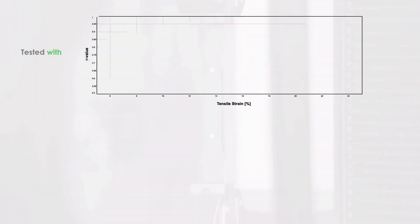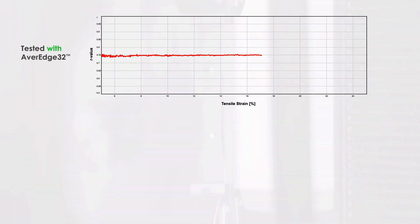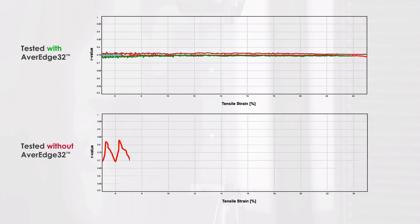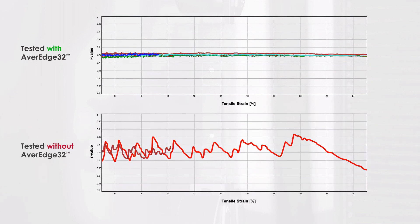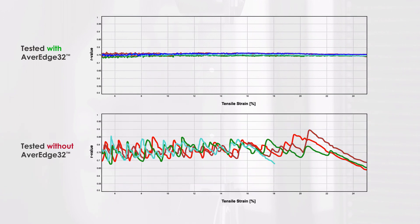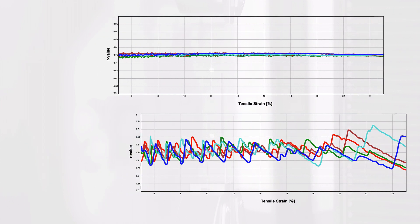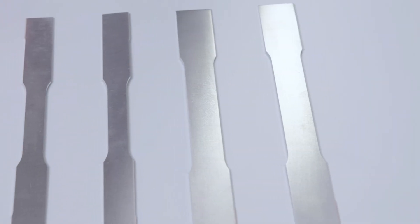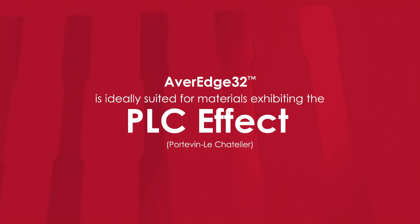It then averages these measurements in real-time, resulting in a smooth and repeatable transverse strain value, which eliminates the need for retesting due to an out-of-bounds R-Value.